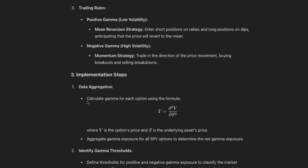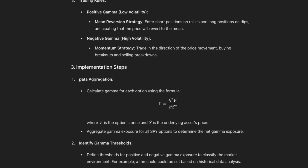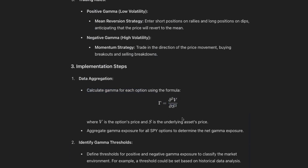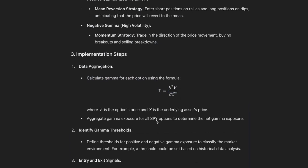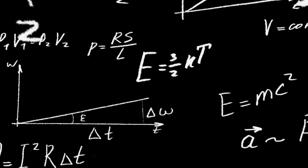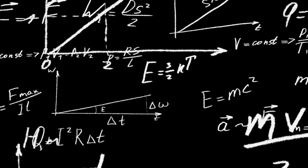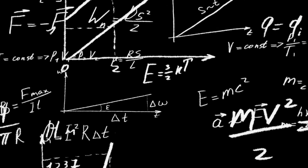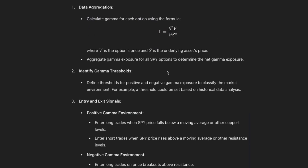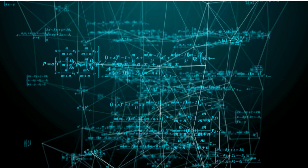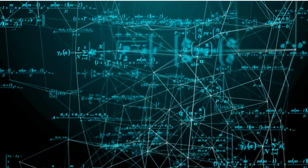If you look down here, we're talking about the implementation steps. And you can actually do this manually — you can actually calculate the gamma exposure at a particular point in time for a particular ticker. We used to actually do this before we built out our application; we were calculating gamma exposure manually for the day and creating a model based on that.